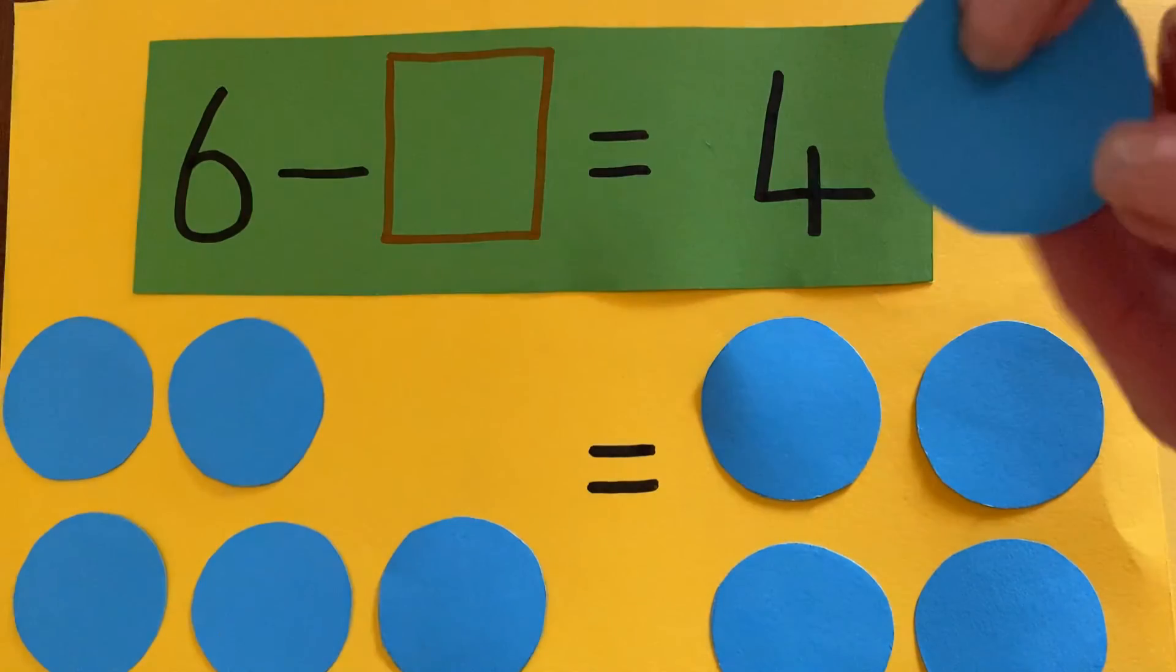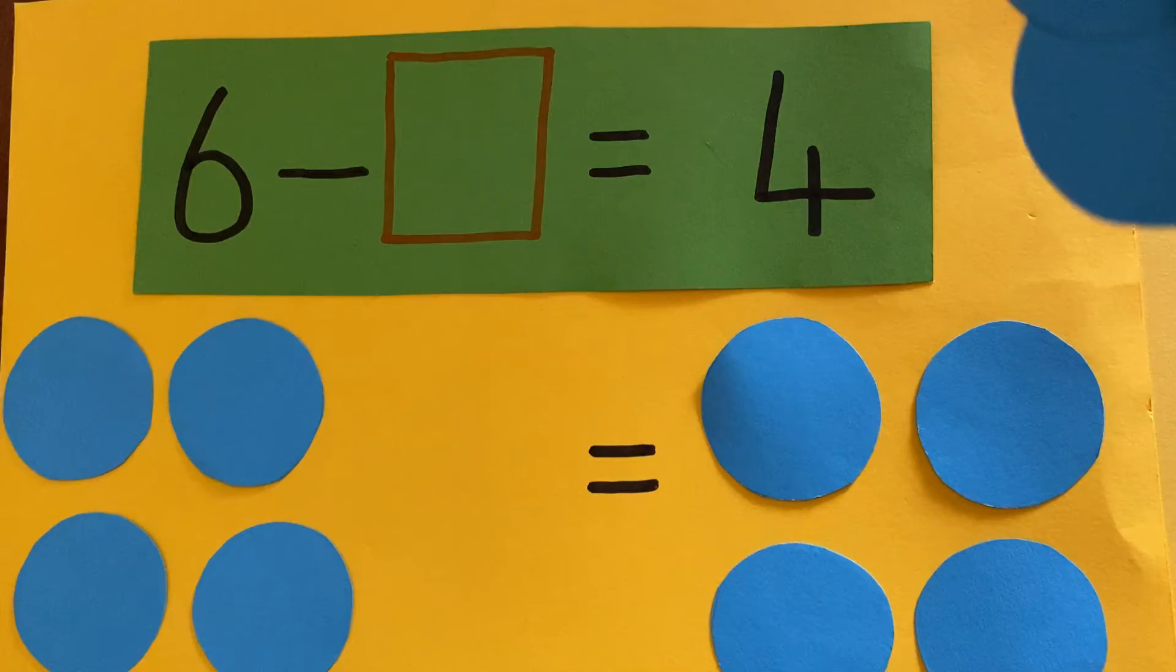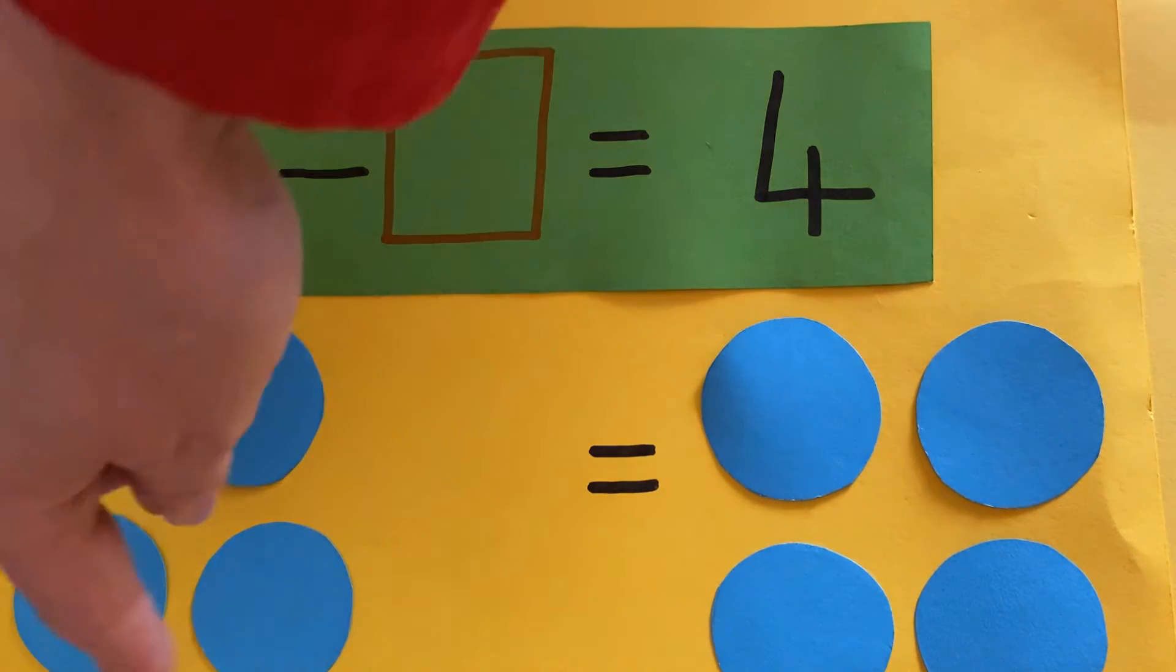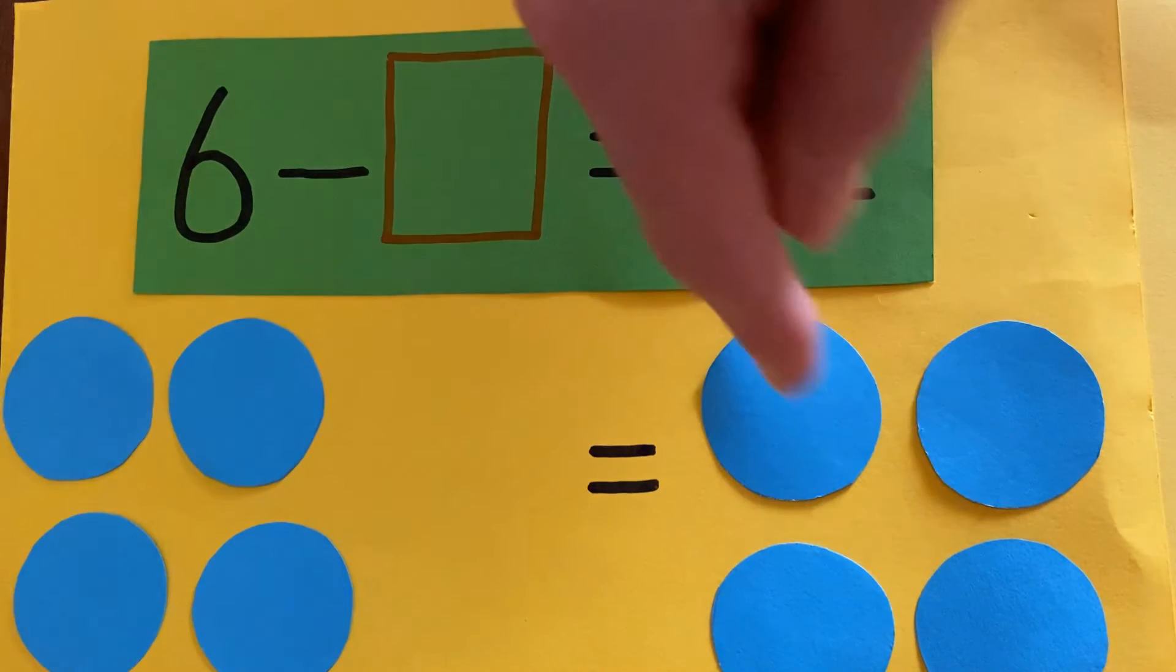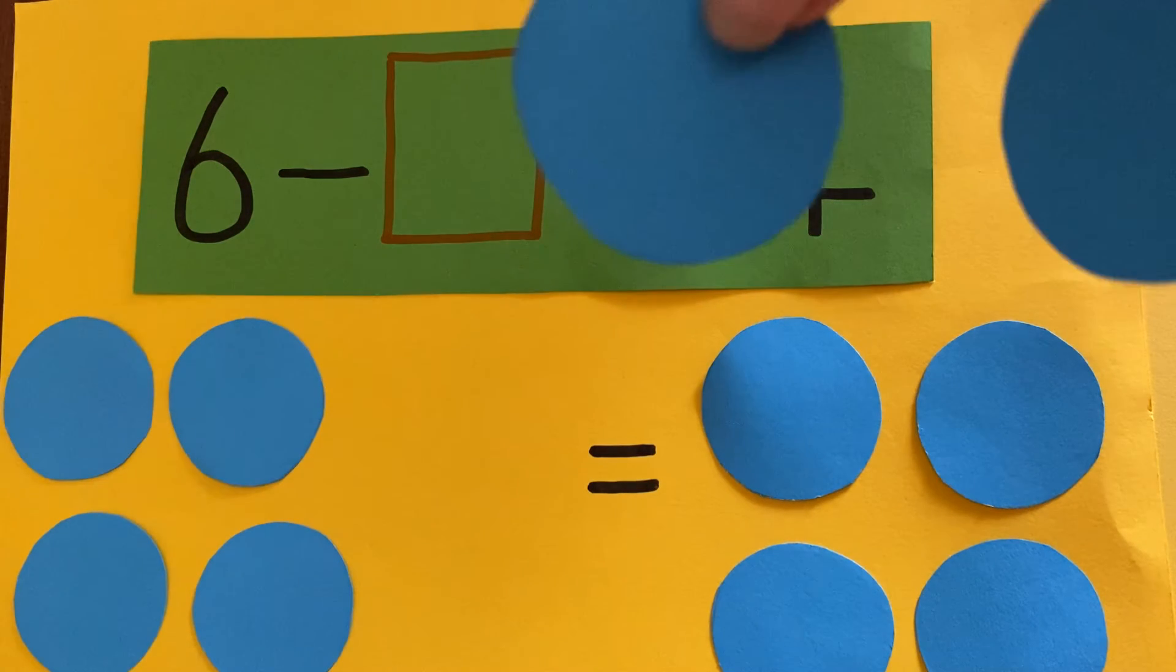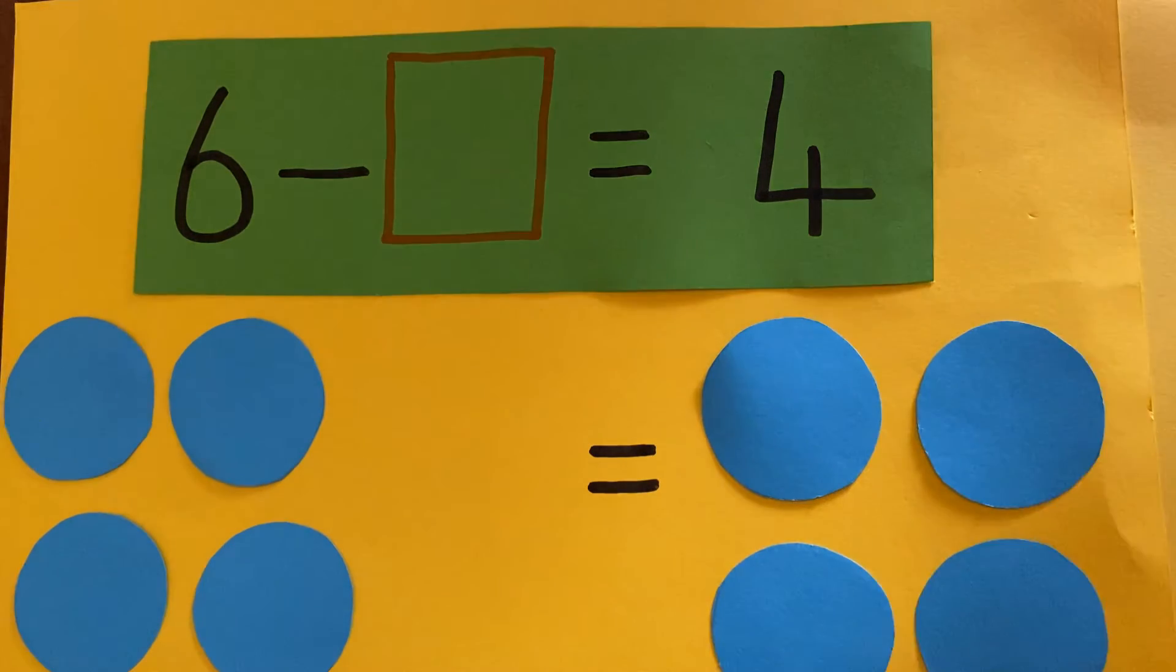Oh, I don't need that one. And I don't need that one. So that's four is the same as four. How many have I taken away? Two. That must be my missing number.